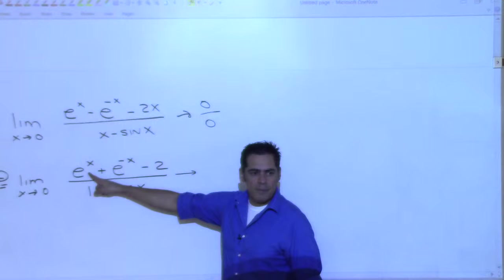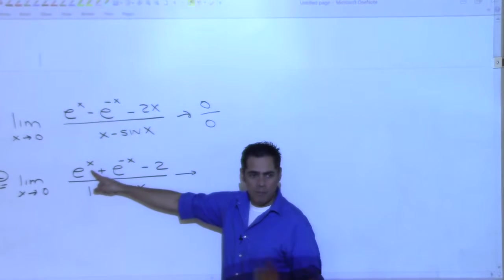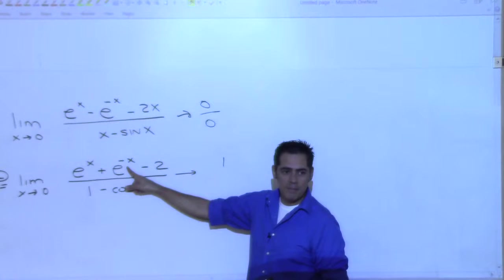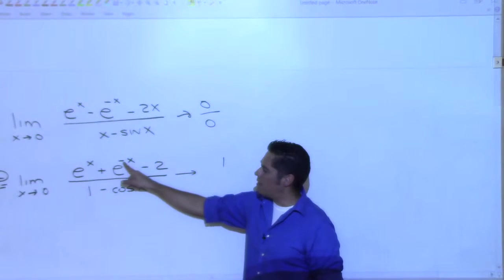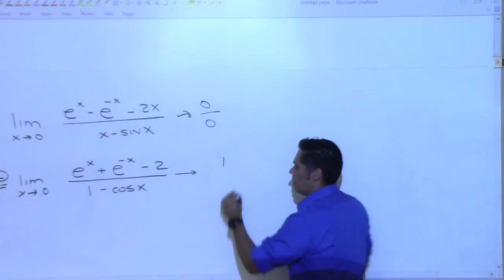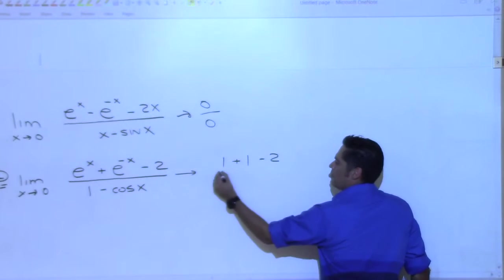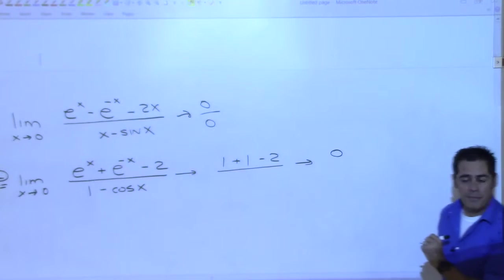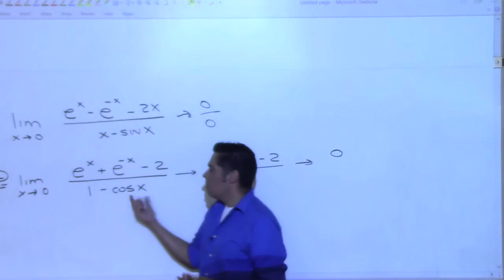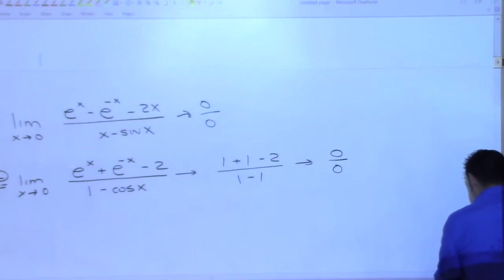Tell me what this is. If x is going to zero, what's e to the zero? One. Plus e to the negative zero — negative zero is the same as zero, so e to the zero again, which is one. And then minus two. So the top is headed to zero. How about the bottom, Emily? Cosine of zero is one, so we get one minus one on the bottom — that's zero. So we get zero over zero again, and we have to use L'Hôpital.